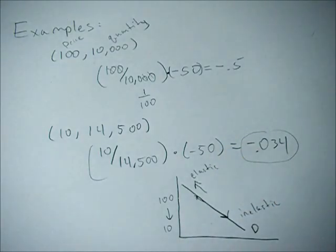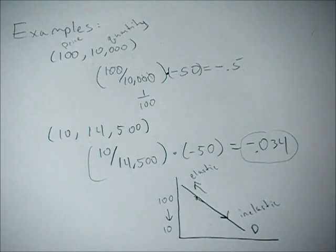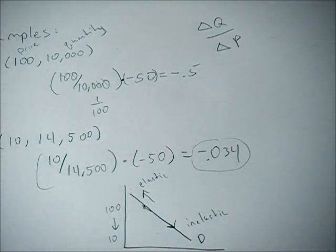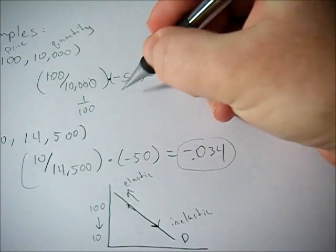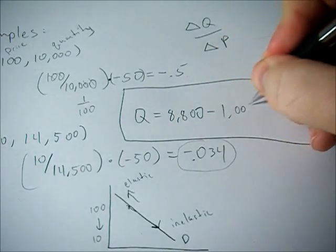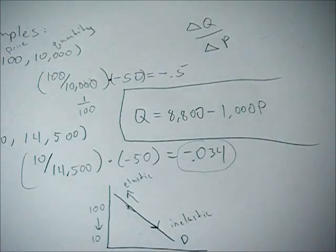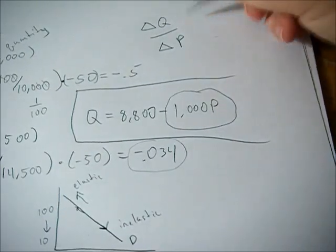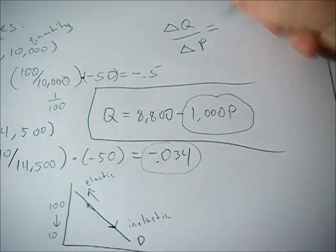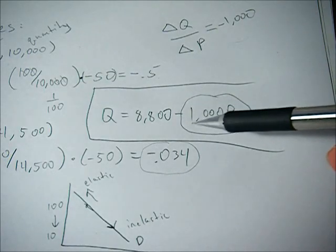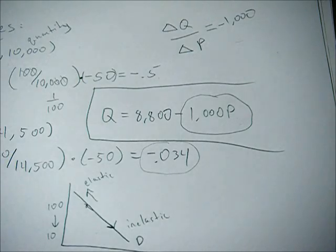Hopefully that helps. Remember, the key trick to calculating point price elasticity is finding your change in Q over change in P. For one more example: if the demand function is Q equals 8,800 minus 1,000P, when P changes by one, Q changes by negative 1,000, so the change in Q over change in P is negative 1,000. You can either take the derivative of the function or simply identify the coefficient on P to get that value.